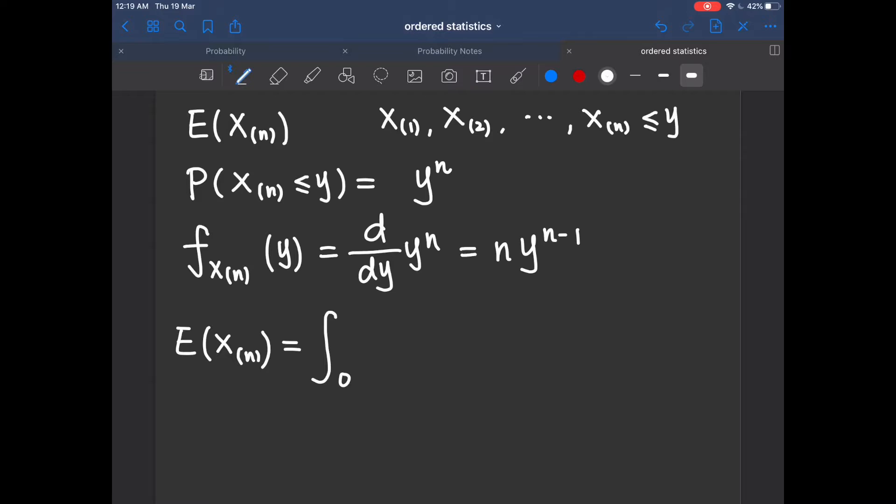So the expectation of Xn can be easily computed since we now know the PDF of Xn. That is to integrate from 0 to 1, y multiply to the density function, which is this. So after the integration, you will realize that the answer is n over n plus 1. So I will attach the detail working in the link down below in the description, so you don't have to worry about all the computation details.